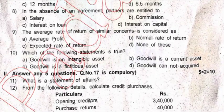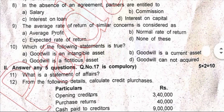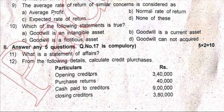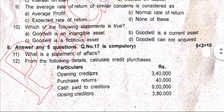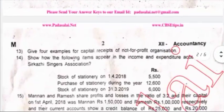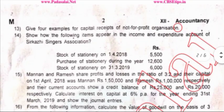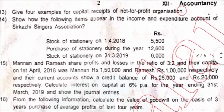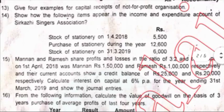Topic two: answer any five questions; question number 17 is compulsory. What is the statement of affairs? From the following details, calculate the credit purchase: opening creditors, purchase returns, cash to creditors, closing creditors. Question 13: give examples of capital receipts for a not-for-profit organization. Question 14: show how the following items appear in the income and expenditure account.